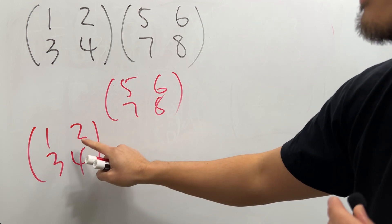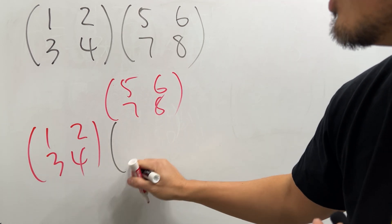Now let's go ahead and do the dot product. This times this is 5, this times this is 14. Together you add them out, you get 19.